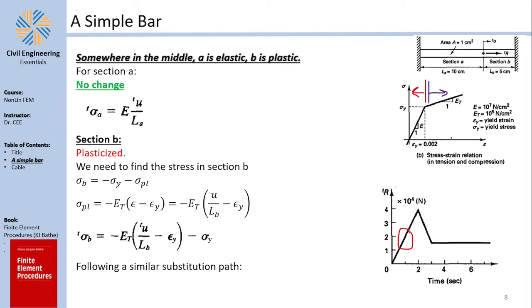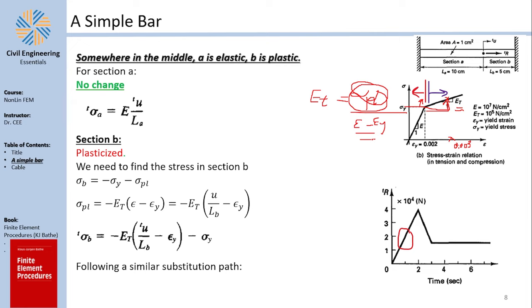Let's clarify with a small example. Say we are at a strain of 0.003 in the plastic region. The sigma there equals sigma_yield plus a small delta-sigma (sigma_plastic). Taking the triangle with slope ET, we get: ET = sigma_plastic / (epsilon - epsilon_yield), so sigma_plastic = ET × (epsilon - epsilon_yield). With sign considerations for compression, the principle is the same — the plastic stress equals the strain difference times the tangential elastic modulus ET.